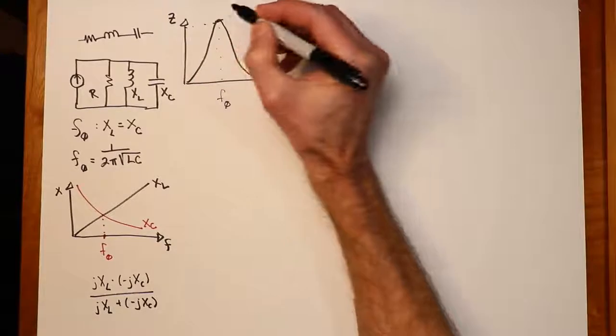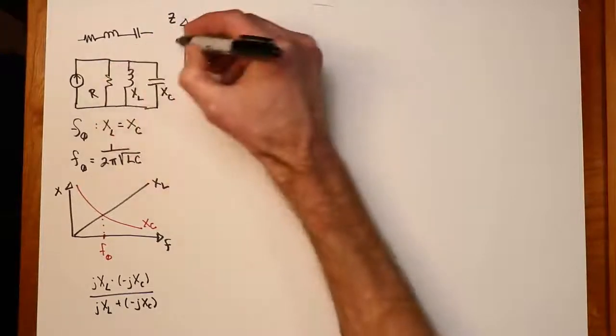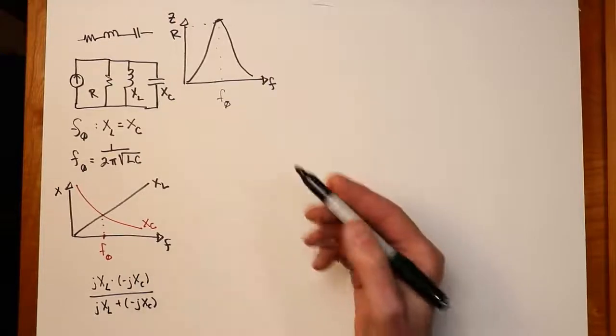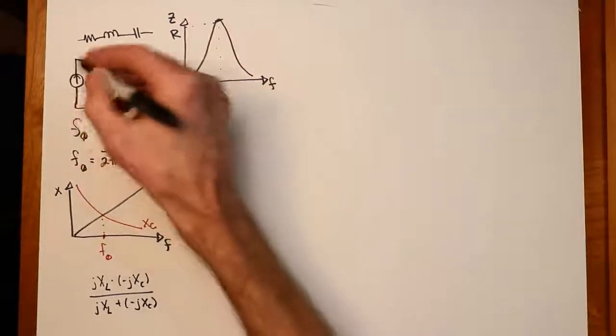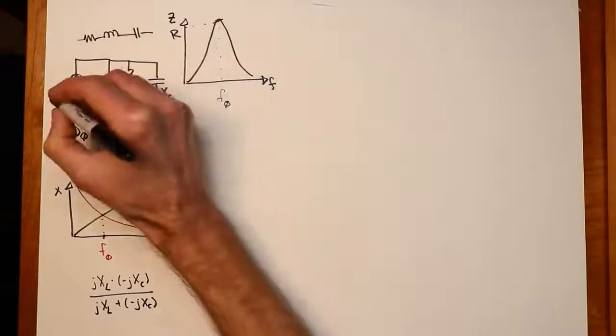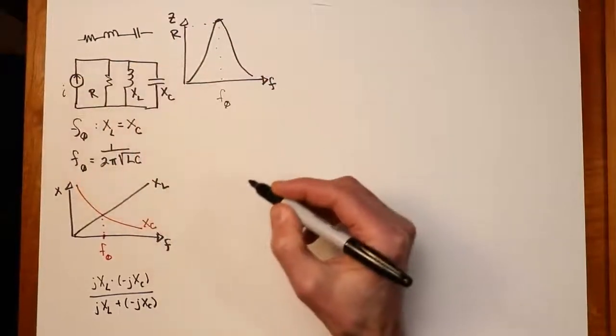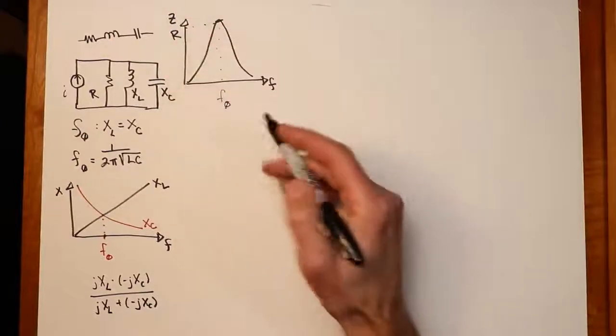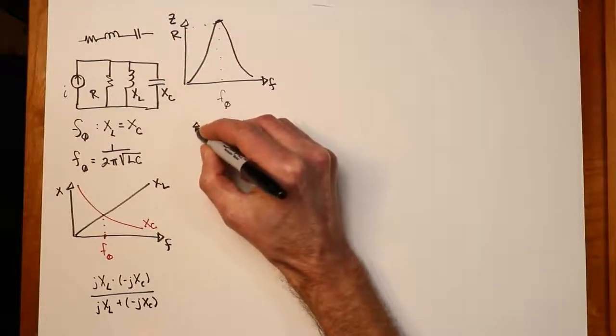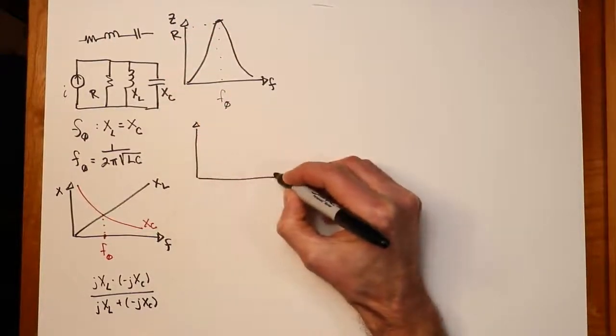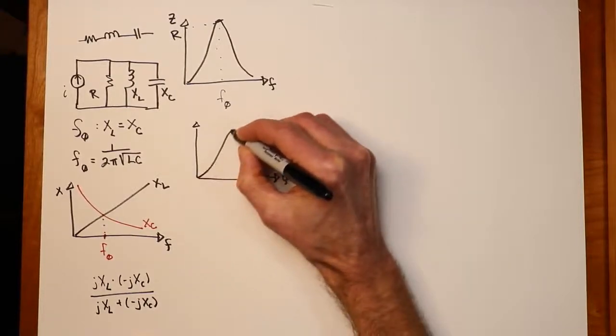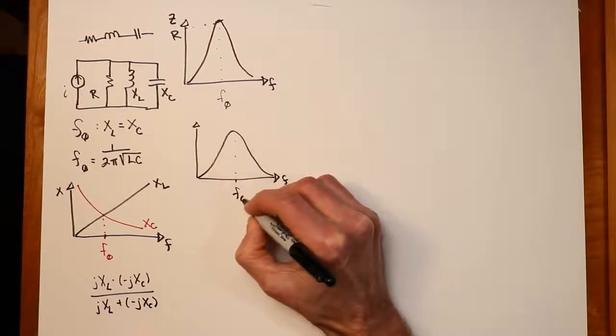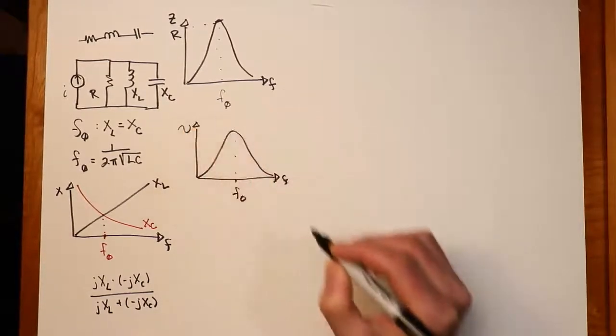What is this peak value? Well, that is the value of R, the total R that we have in the system. Now given that and given that we're driving this with some current source, some value I over here, the voltage across this will echo this shape. In other words, we'll get something as a voltage that looks like this. Comes up to a peak and then drops off, and again, there's the F0. So this is the voltage across the parallel network.